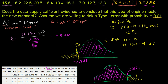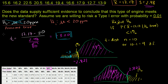We got a t-value of negative 3, which is a good bit less than our threshold of negative 2.821. Our t-statistic falls in the rejection region, and the probability of getting it is even less than 1%. Because the probability of getting our observed t-statistic is less than 1%, we can safely reject the null hypothesis and conclude that the engines do meet the emission standards, with less than a 1% chance of making a type 1 error.